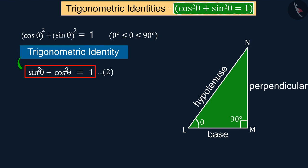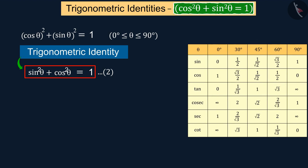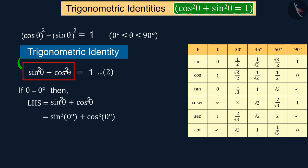Let's see that this identity is verified between 0 degrees to 90 degree angle. Put the value of 0 degree of theta in the left side of equation 2 for solving.